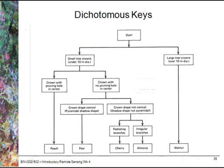When creating an image interpretation key, we can use dichotomous keys to make things really simple. Starting with a yes or no question — for example, is the tree crown under or over 10 metres in diameter — if you have a yes or no answer, you move to the next step. At each step you're breaking down into two, and in this example it will eventually lead us down to a particular fruit or nut tree.